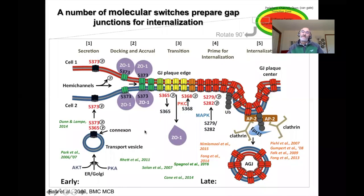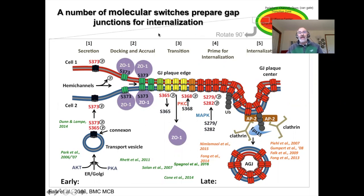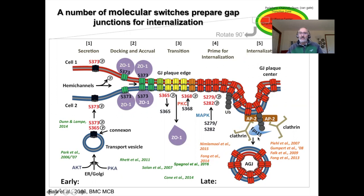We have characterized on a molecular basis the turnover mechanism and machinery, and found that a number of molecular switches prepare gap junctions for internalization. This includes binding and release of a scaffolding protein called ZO-1, phosphorylation and dephosphorylation on critical amino acids in the carboxy terminal domain of the Connexin 43 protein, ubiquitination, and finally recruitment of the clathrin-mediated endocytosis machinery that then internalizes gap junctions.